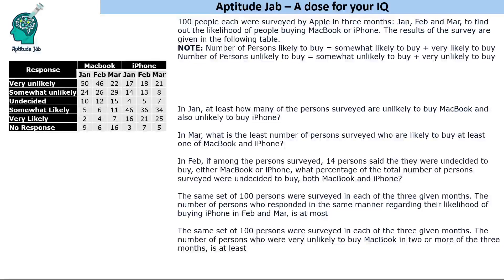Welcome to Aptitude Lab. This is a set based on maximization and minimization. 100 people were surveyed by Apple in three months — January, February, and March — to find out how likely they are willing to buy a MacBook or iPhone. If a person responds 'somewhat likely' or 'very likely' to buy, that person will be categorized as 'likely to buy.' Similarly, if a person says 'somewhat unlikely' or 'very unlikely,' they are considered as 'not buying the product.'